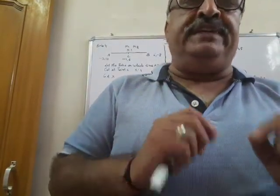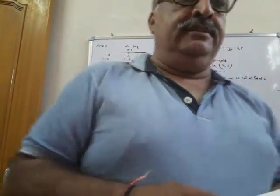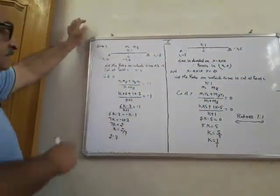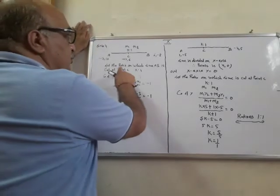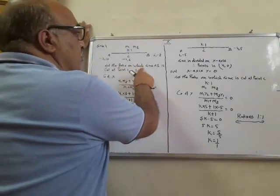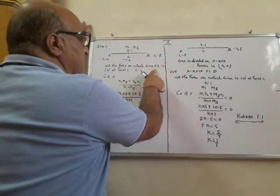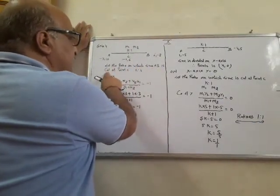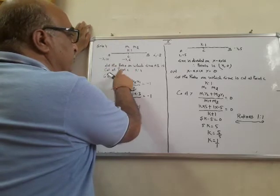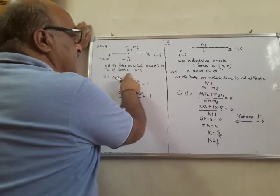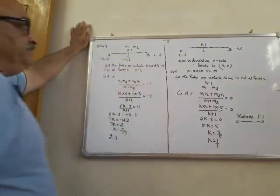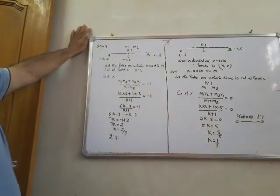This is the difference between both sides. So, let the ratio on which line AB is cut at point C be K ratio 1.